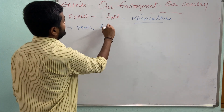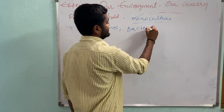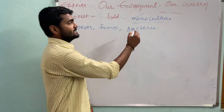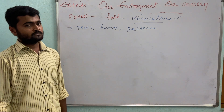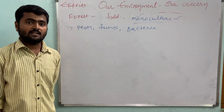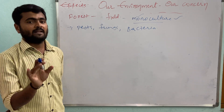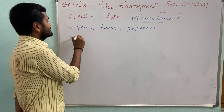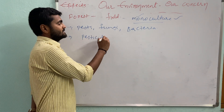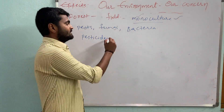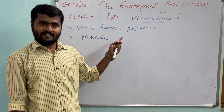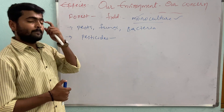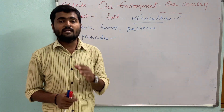While monoculture produces a huge amount of food for the growing population, it also allows many pests, fungi, bacteria, and viruses that cause plant diseases to multiply very quickly, because they get a large and constant food supply. So because of monoculture, these harmful organisms multiply rapidly and damage the plants in that area. To control them, we started using lots of pesticides, fungicides, and other harmful chemicals.